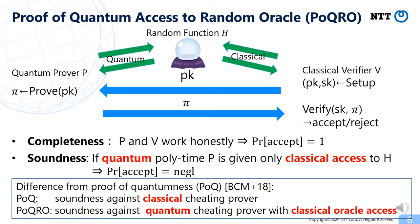More specifically, the verifier first generates a pair of public key and secret key and sends public key to the prover. Then the prover, given public key and quantum access to random functions, generates the proof pi and sends it to the verifier. The verifier verifies the proof to output acceptance or rejection. We require completeness and soundness. Completeness means that if both parties work honestly, then verifier accepts with probability 1. Soundness means that if prover only has classical access to random functions, then verifier accepts with negligible probability. If you're familiar with the notion of proof of quantumness introduced by Brakerski et al., you may find similarity with PoQRO.